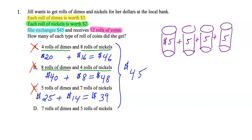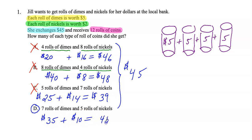Now if I were taking the real test at this point, I would circle D and move on. But let's just make sure it's correct since we have the time. It's $5 times 7, which is $35, plus $2 times 5, which is $10. $35 plus $10 is $45 — these match up. So D is my answer: 7 rolls of dimes plus 5 rolls of nickels equals 12 total rolls, and the total worth is $45.